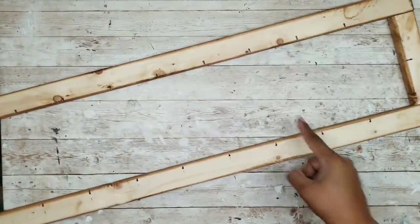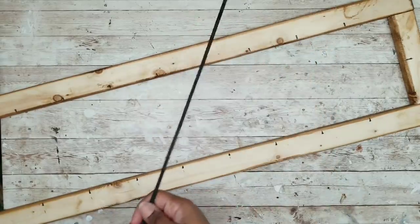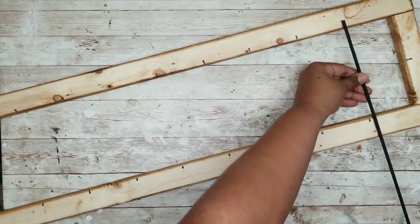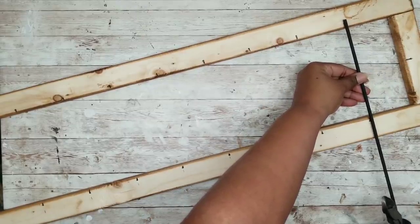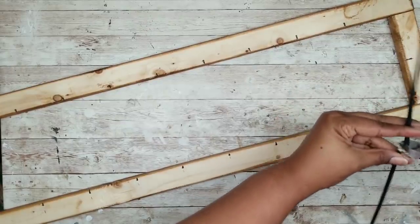Now with each one of our marks we are going to be laying one of our skewers across each one of those marks. I'm going to take one of my skewers, lay it across the marks and then I'm going to cut it where it overlaps at least a half an inch on each side and I'm using my wire clippers to cut it.